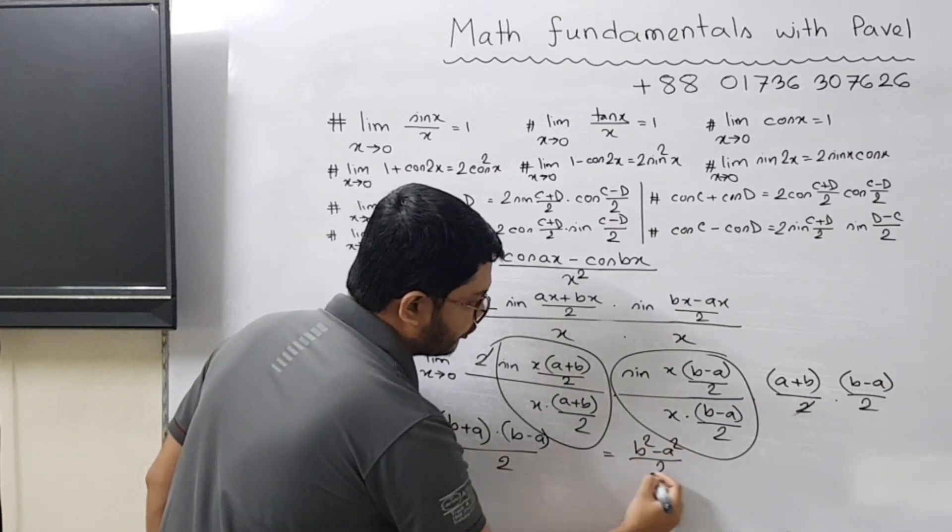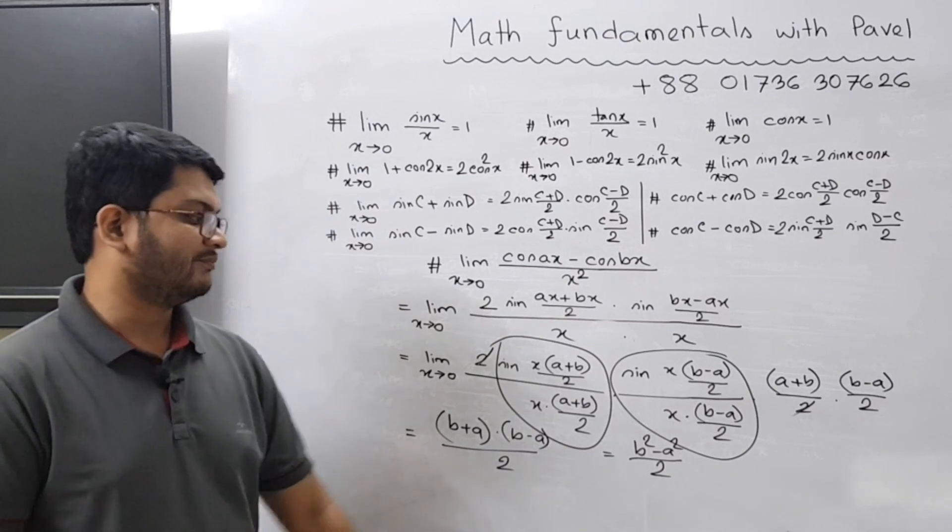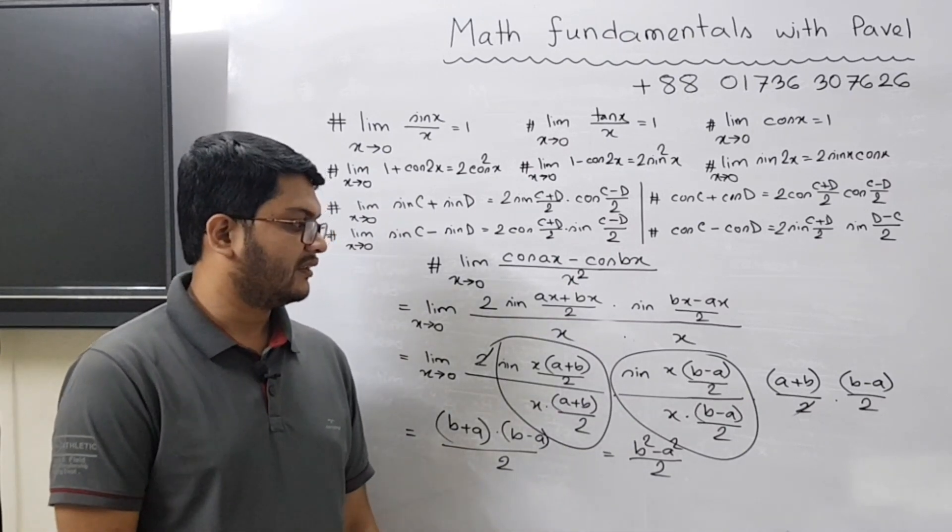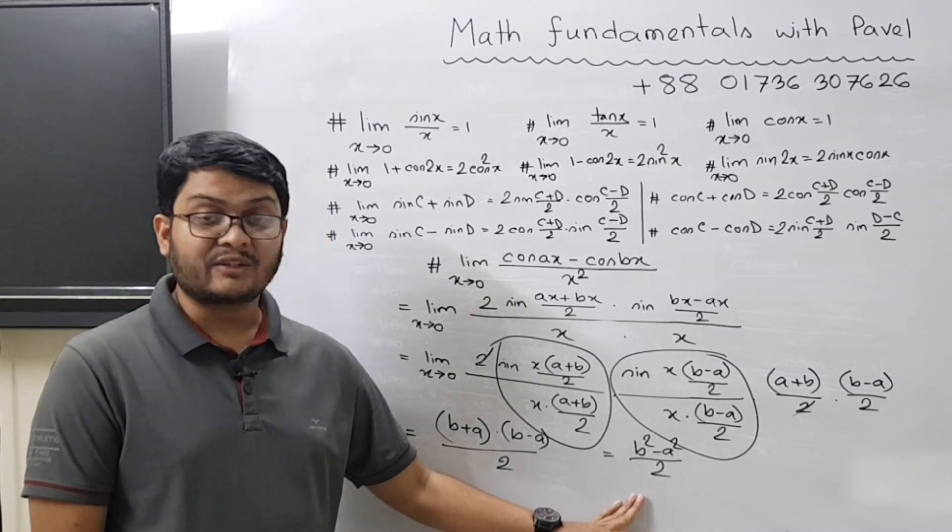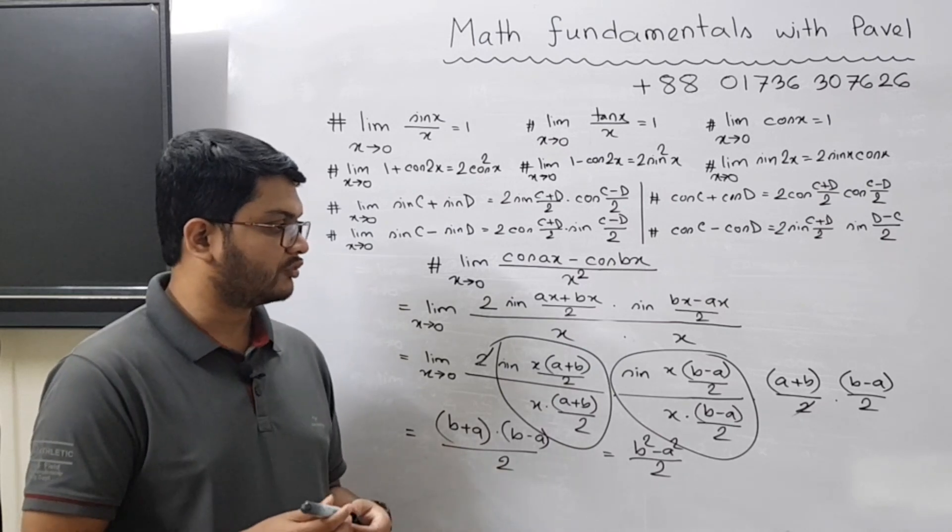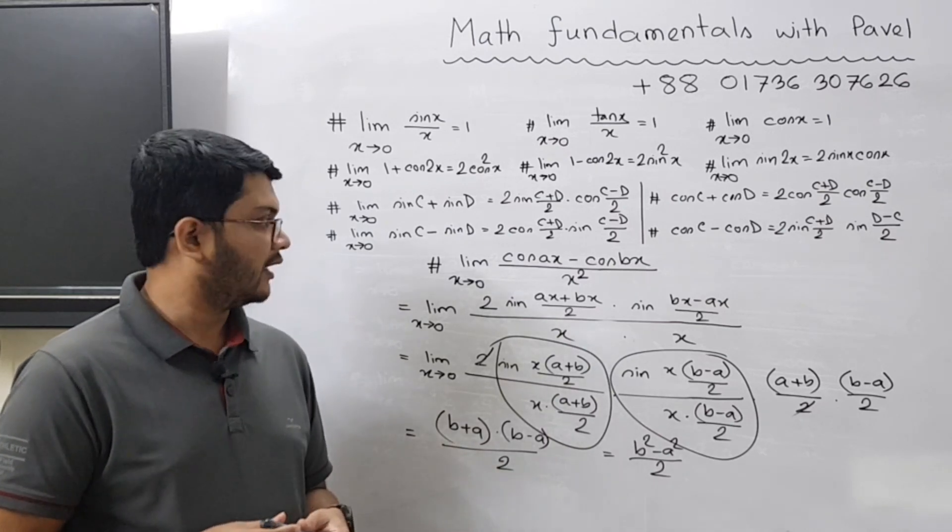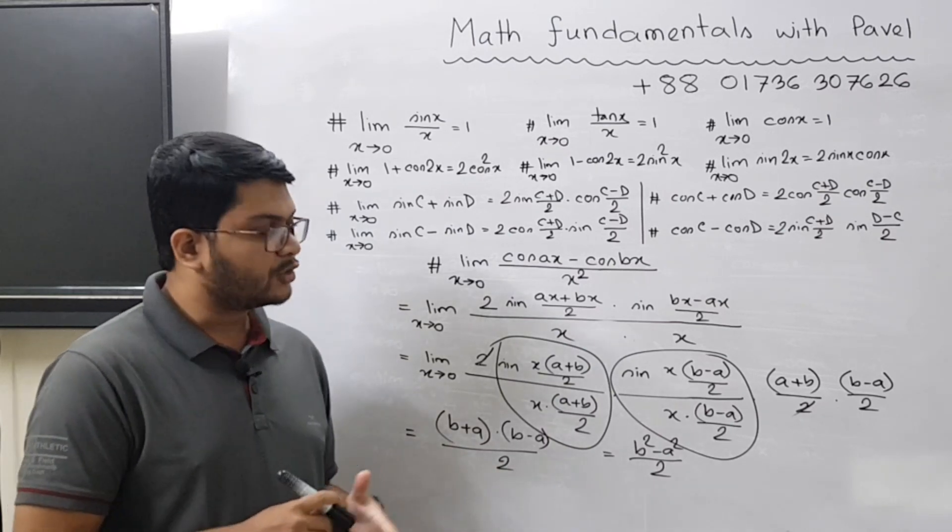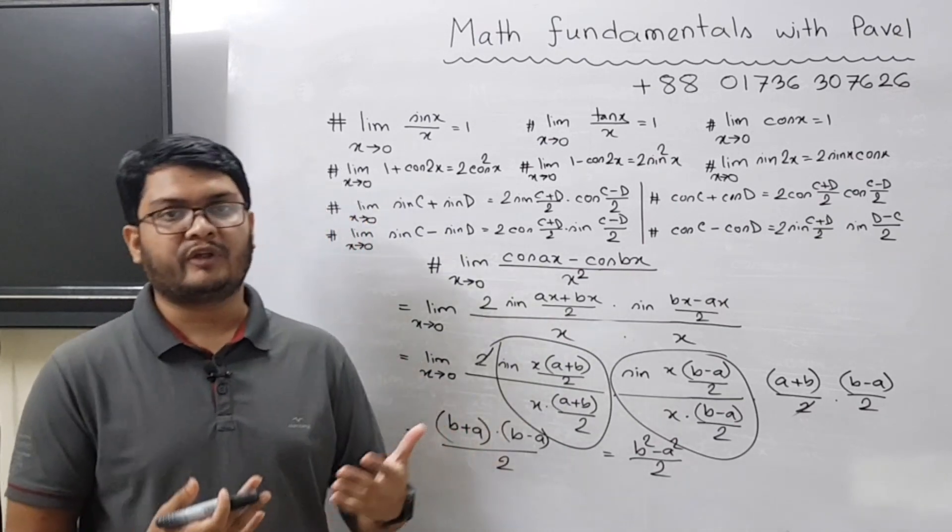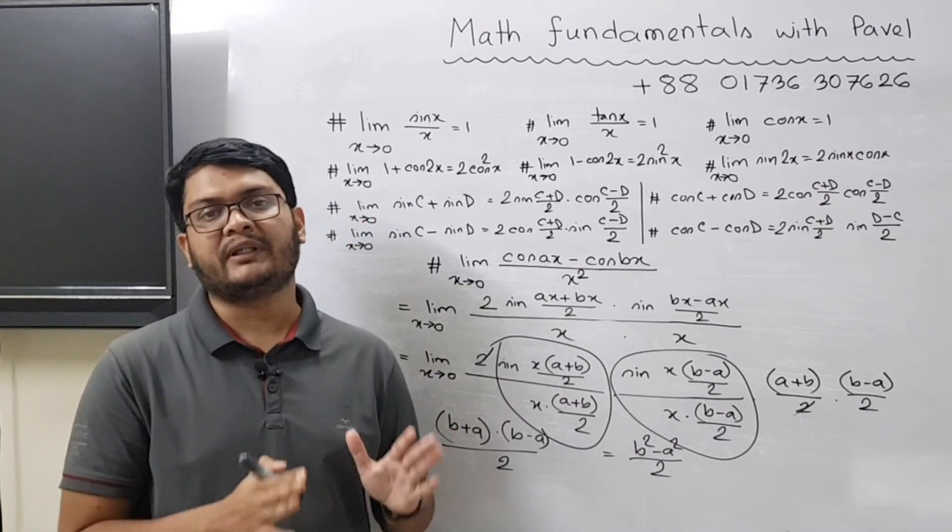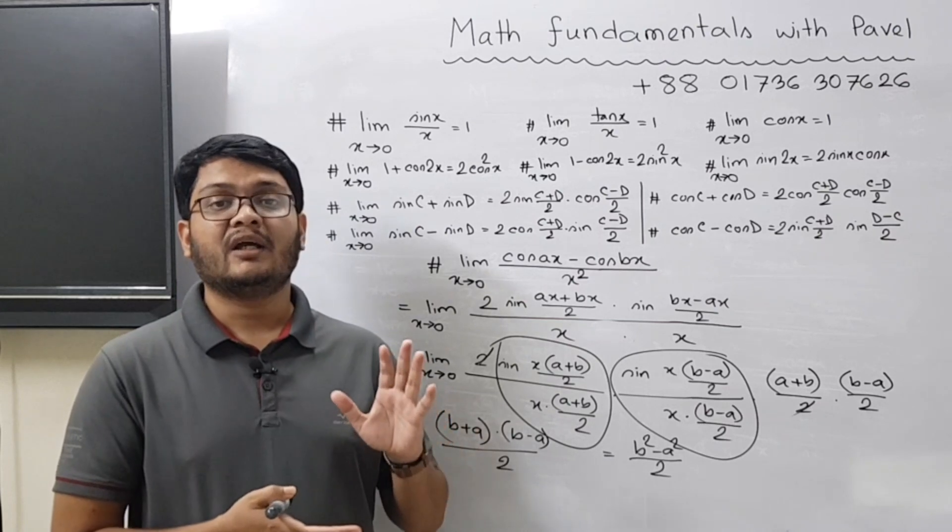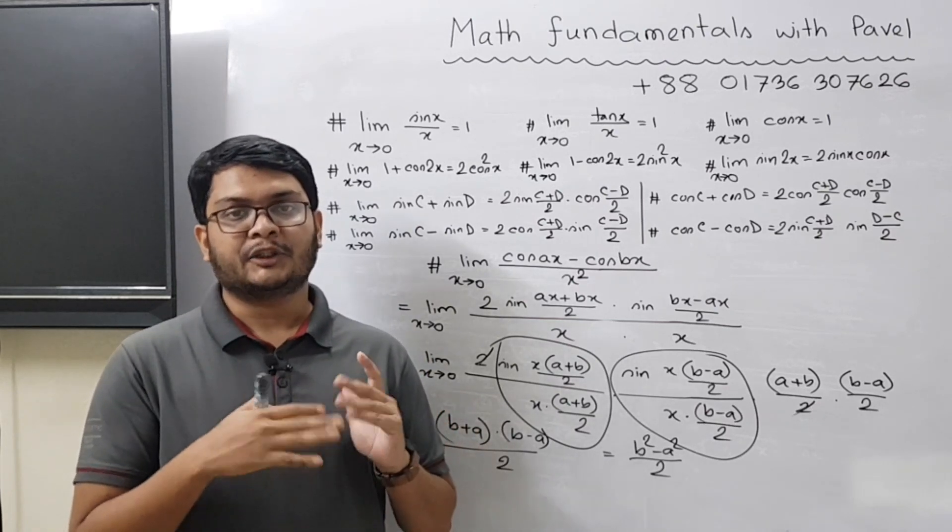You get b plus a times b minus a divided by two, so you can write it as b square minus a square divided by two. That is the final answer. A very interesting problem, a very beautiful problem. I hope you understand this problem.